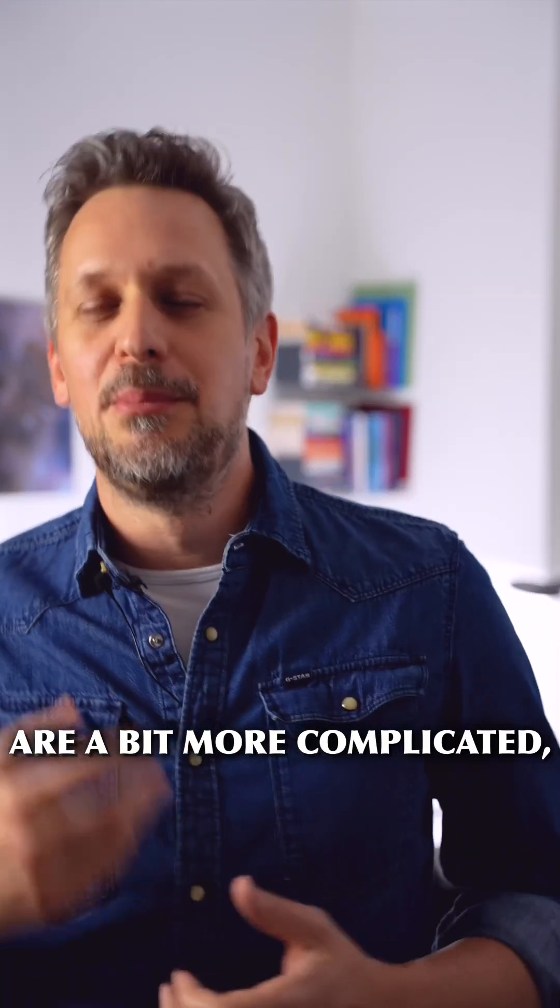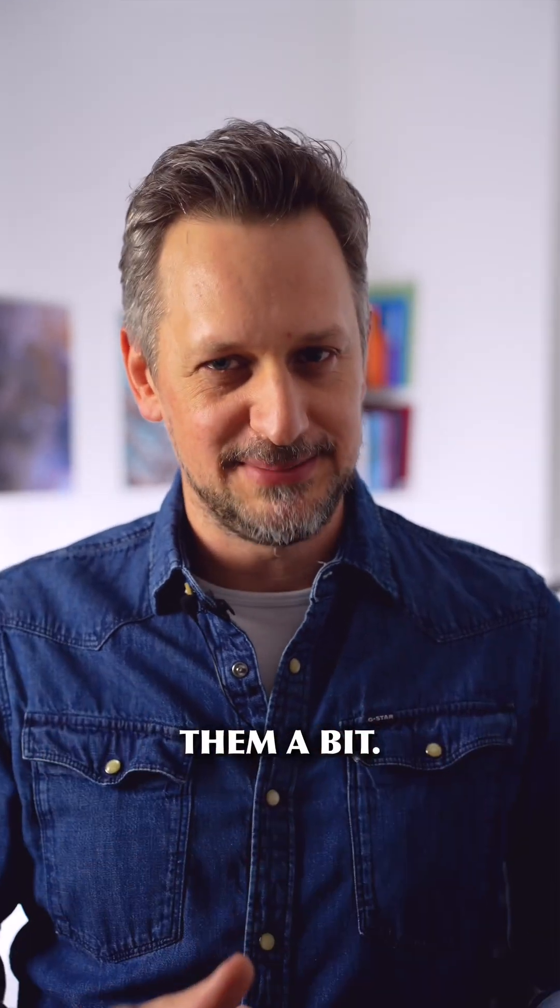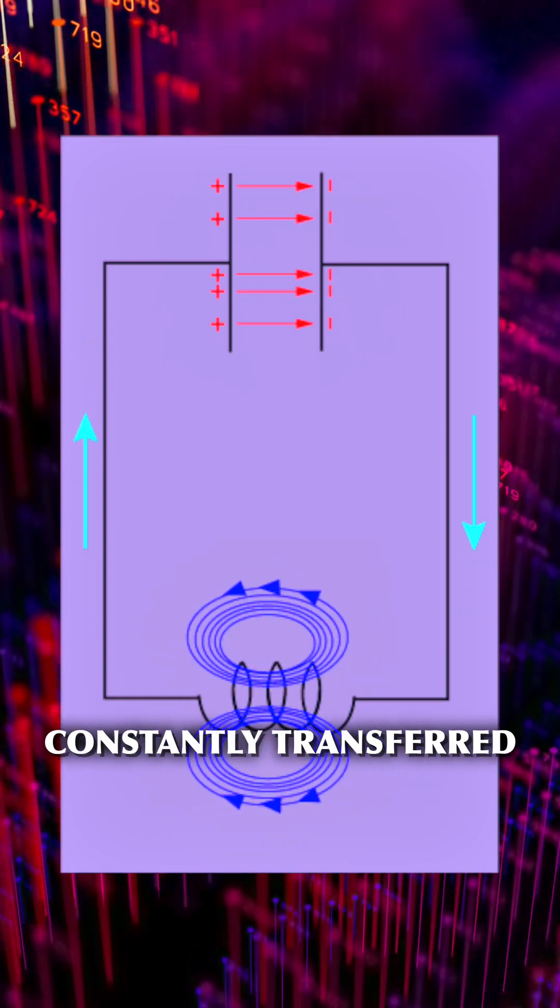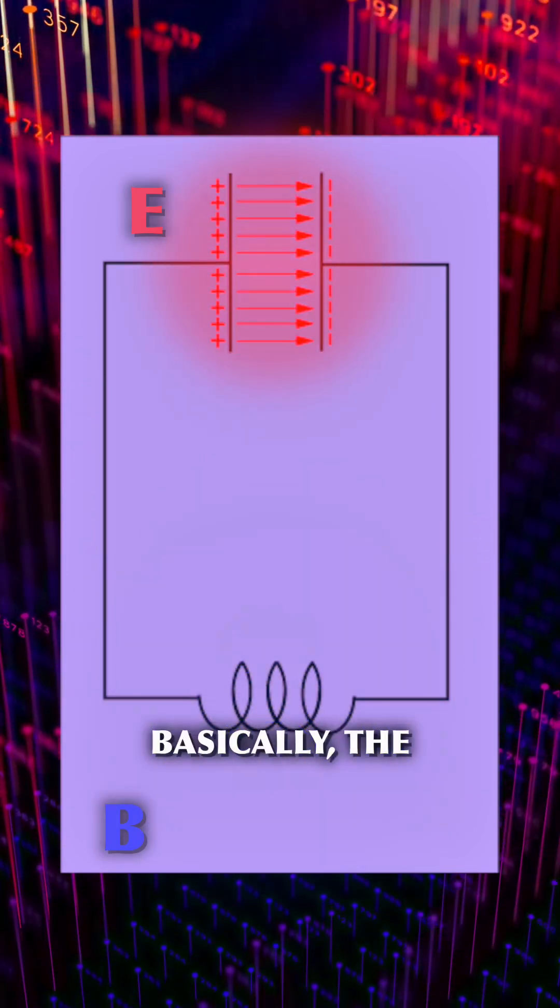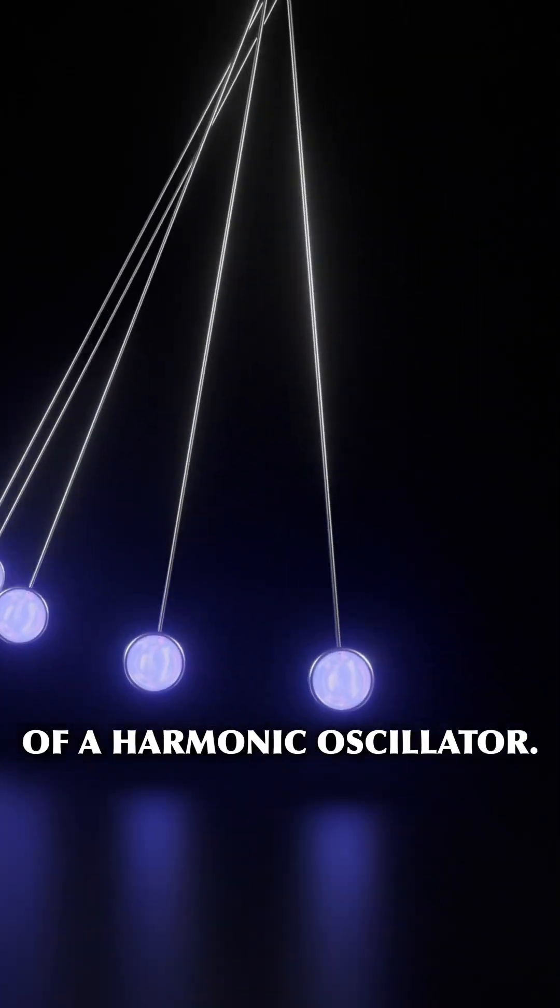Superconducting qubits are a bit more complicated, so let's oversimplify them a bit. They are like an LC circuit, where the energy is constantly transferred between the electrical field of the capacitor and the magnetic field of the coil. Basically, the electromagnetic version of a pendulum, of a harmonic oscillator.